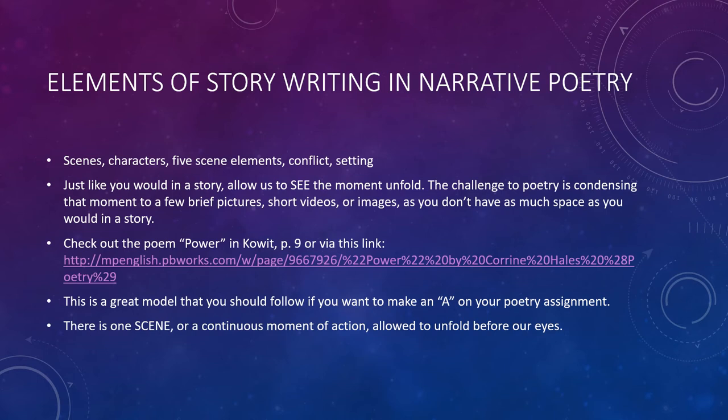The poem 'Power' by Cawitt on page nine is an excellent poem — if you wrote a poem like this, you could get an A on your poetry assignment. If you don't have your textbook, see the link and it will take you to the poem. Why is it successful? Why does it meet the guidelines? Because it has one scene — a continuous moment of action allowed to unfold before our eyes. I invite you to pull it up in a separate window. There's only one scene: a continuous moment of two boys who stop a train by putting up a stuffed scarecrow across the rails, forcing the conductor to stop. It's a practical joke, and the boys watch the scene unfold and are changed by the moment.